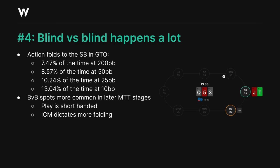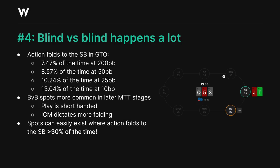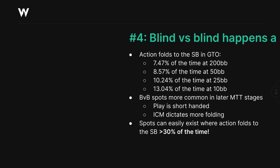In addition, ICM spots will demand everybody folds slightly more often than in chip EV, and removing multiple players from the table to create a four-handed or five-handed spot could easily put us in a situation where the overall frequency that action folds to the small blind is greater than 30%. It's hard to find other specific formations replicated with this kind of significant frequency. Clearly, blind vs blind is an important part of tournament poker play.